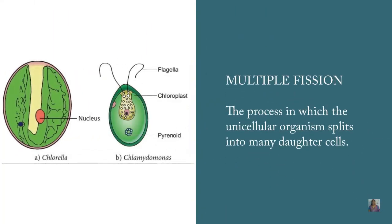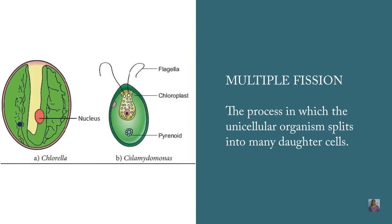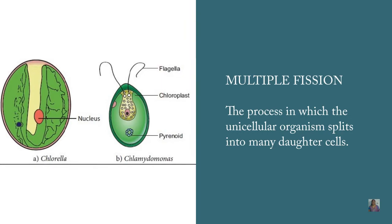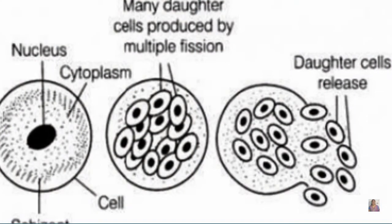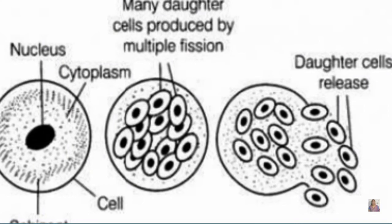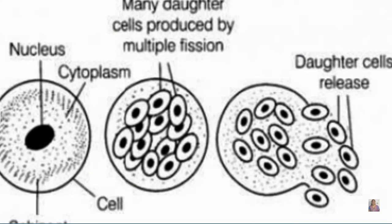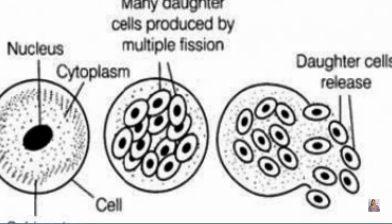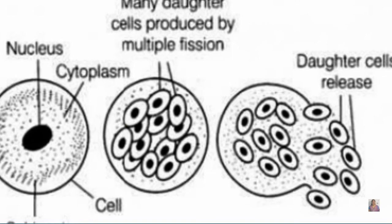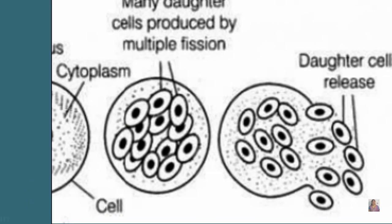In multiple fission, the unicellular organism splits into many daughter cells. Examples include chlorella and chlamydomonas. In multiple fission, many daughter cells are produced and then finally all the daughter cells are released from the parent cell.